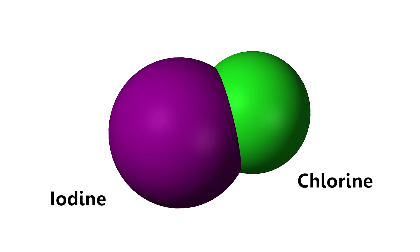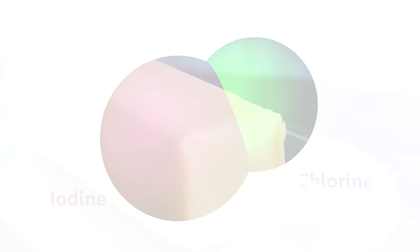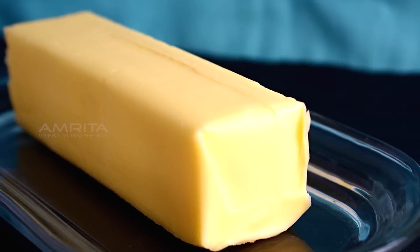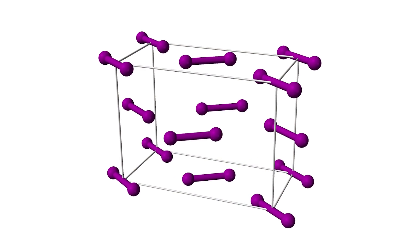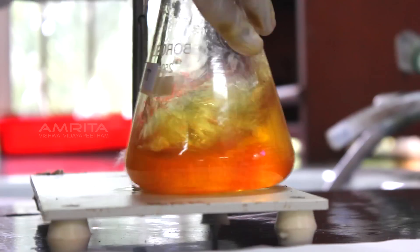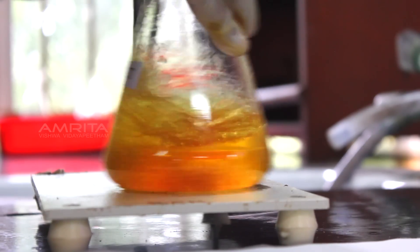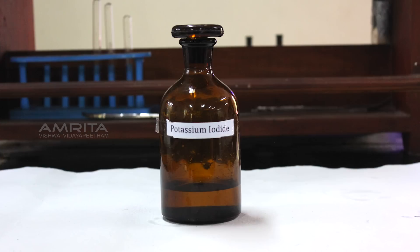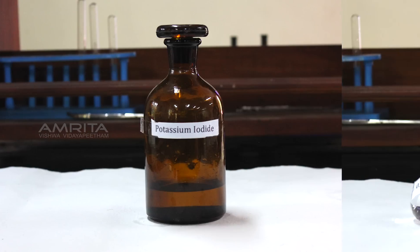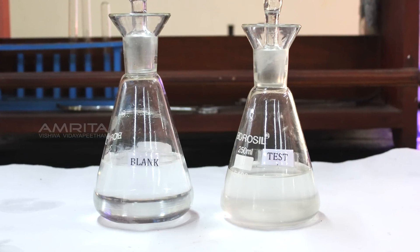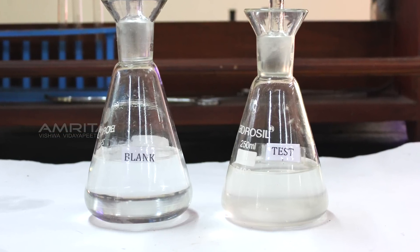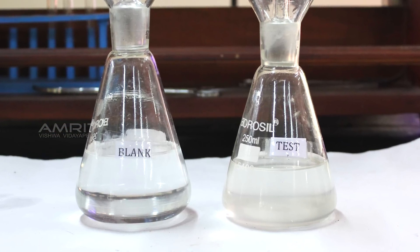The iodine monochloride reagent is allowed to react with fat in the dark. The amount of iodine consumed is then determined by titrating the iodine released on adding potassium iodide with standardized sodium thiosulphate solution and comparing it against the contents in the iodination flask labelled blank.